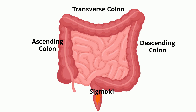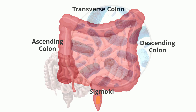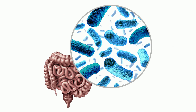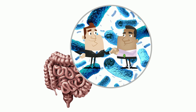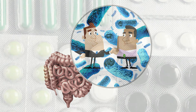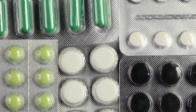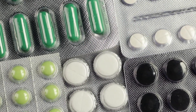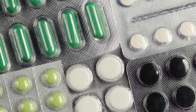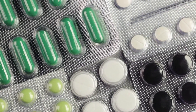Your large intestine also contains trillions of bacteria, which are part of your microbiome. These bacteria and your large intestine have a very important symbiotic relationship. The bacteria produce vitamin K and B vitamins, and are vital for the digestion and health of your large intestine.